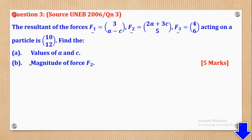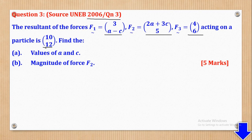Now we shall go to question 3. Question 3 came from UNAB 2006, paper 2, question 3. It says: the resultant of the forces F1, F2, and F3 acting on a particle is given. Find part A: the values of A and C, and part B: the magnitude of force F2.